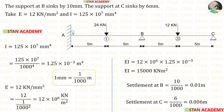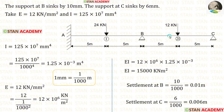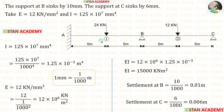In span AB, there is a point load of 24 kN acting at the center. In span BC also, there is a point load of 12 kN, also acting at the center. The moment of inertia for span AB is I, and for span BC it is 2I.